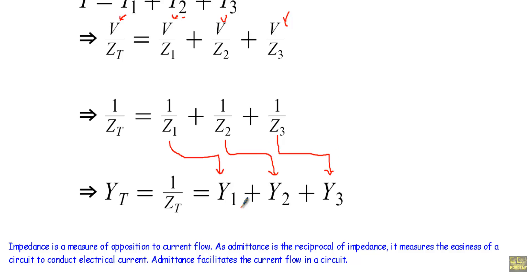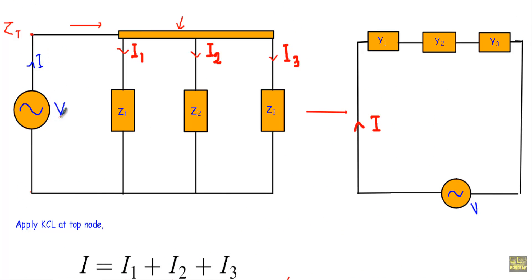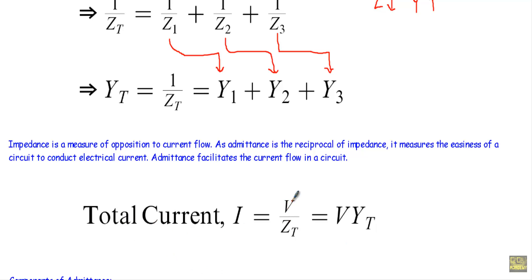Impedance is a measure of opposition to current flow. Since admittance is the reciprocal of impedance, it measures the easiness of a circuit to conduct electrical current — admittance facilitates current flow. The higher the admittance, the more current will flow. By Ohm's law in phasor form, total current I equals V divided by ZT, and the reciprocal of ZT gives total admittance.